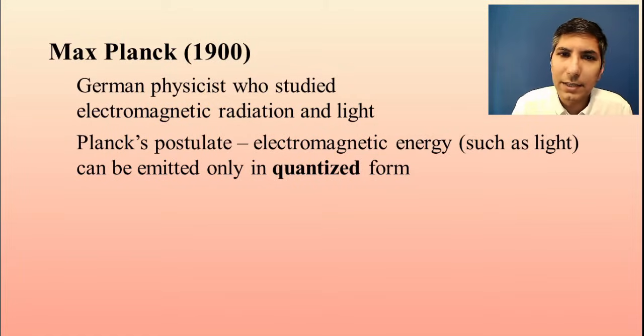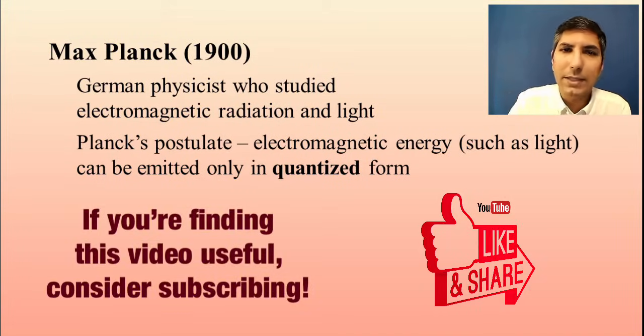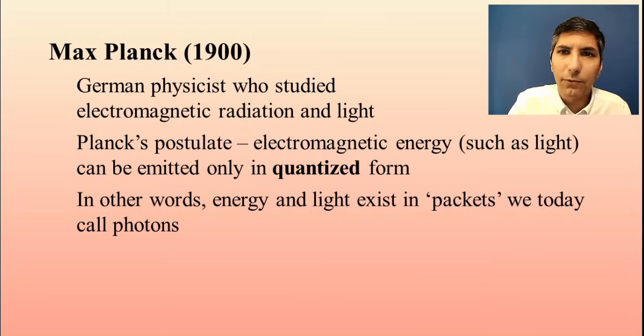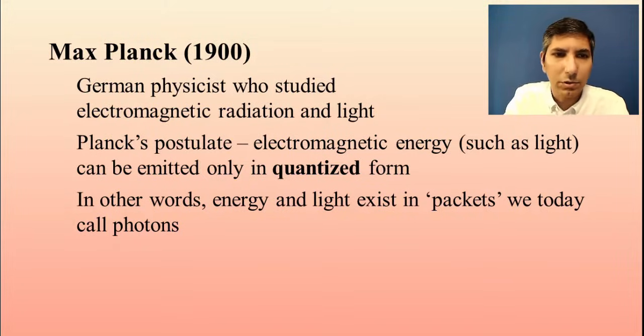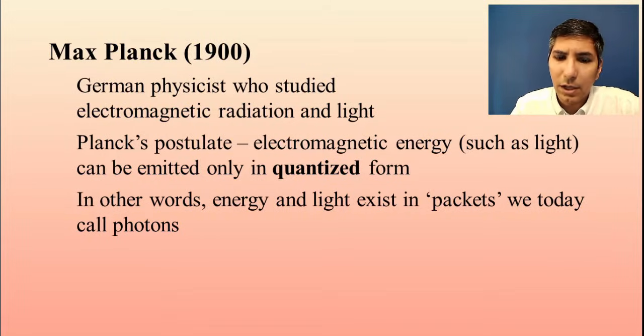Now, Planck's postulate basically says that any type of electromagnetic energy, such as visible light or any of those other types of electromagnetic radiation, are only emitted in quantized form. What does that mean? Well, quantum or quantized form refers to the fact that it can only exist in little nuggets or chunks or packets. And we have learned over the last century or so that this is actually how it works. Energy and light exist in these packets. And any time you see a ray of light or electromagnetic radiation is being given off, it's being given off in multiples of these little nuggets or chunks or packets. We call these photons.